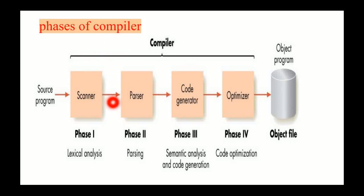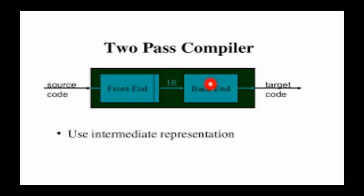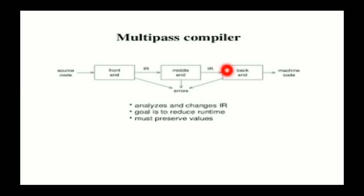So in the case of phases, whatever output comes from one stage gets processed and passed to the next stage. But in the case of passes, intermediate code is generated and passed to the next compiler, which converts it into the target code. So many multiple intermediate code generations occur in the case of multiple-pass compilers.